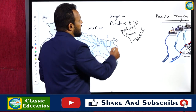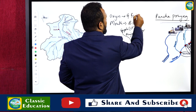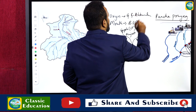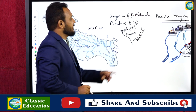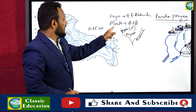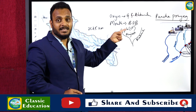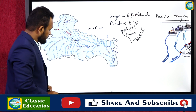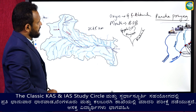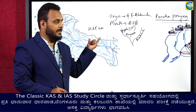The origin is from Gangotri Glacier and Alaknanda, both in Uttarakhand. The mouth of the river is at the Bay of Bengal. The length of the river is 2525 kilometers.